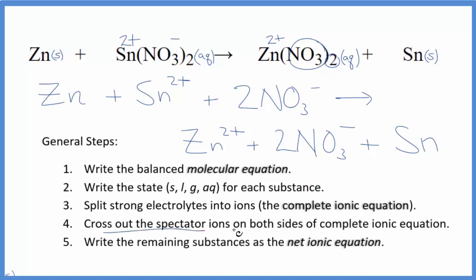Now we can cross out those spectator ions. They're on both sides. So as I look at this, in the reactants we have zinc metal and then the zinc ion. Those are different. The tin two ion and then the tin metal, that's different. But these two nitrate ions, those are exactly the same. So those are spectator ions. Cross those out.